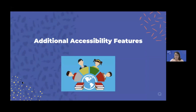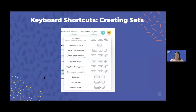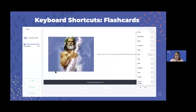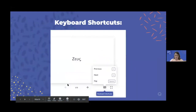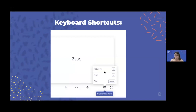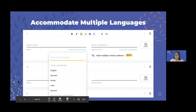Let's talk about some additional accessibility features. There are keyboard shortcuts, which are great for students who find it easier than clicking around. I find Quizlet pretty intuitive, but some of my students really love keyboard shortcuts. They have them for creating sets, for flashcards, and for going through flashcards — previous, next, space. Students can use just their keyboard, which can be really helpful if they're using an iPad or any other tablet.